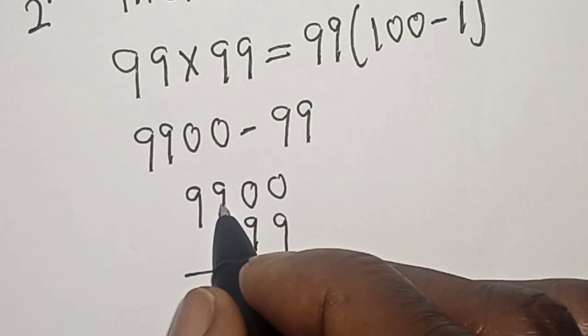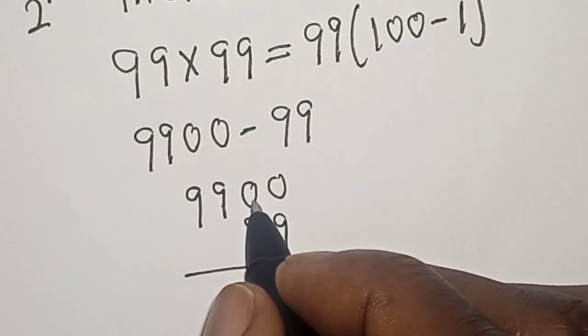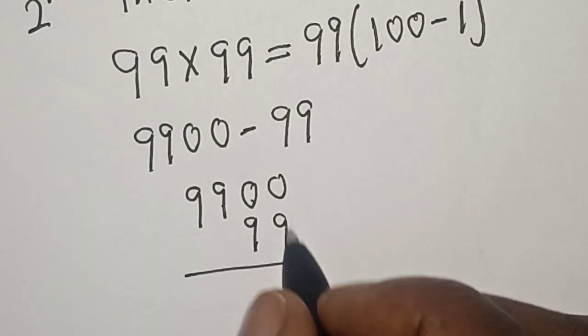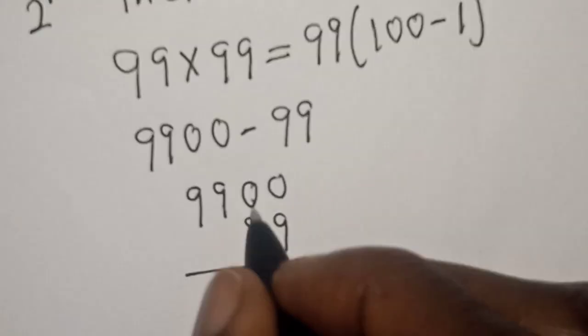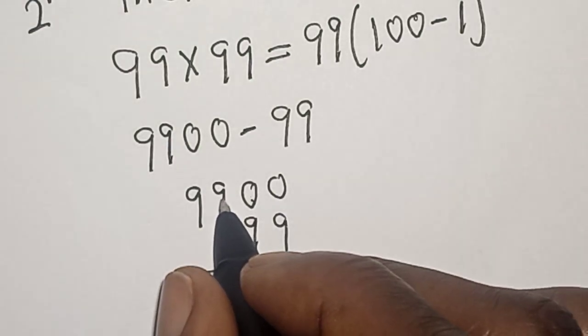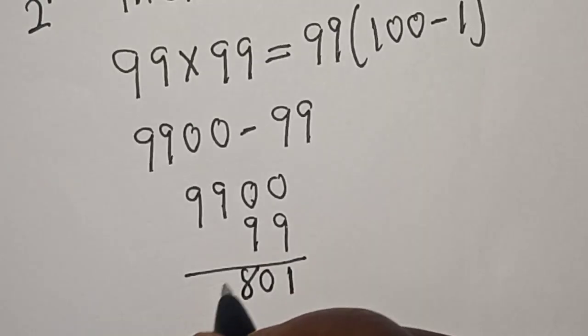You take one from here to this place instead, then from here to this place instead. 10 minus 9, this is 1. Then remain 9 here, 9 minus 9, this is 0. Then this one remain 8, 9.